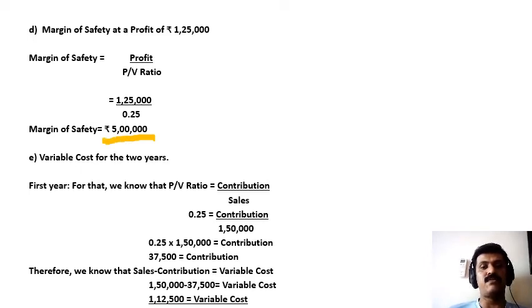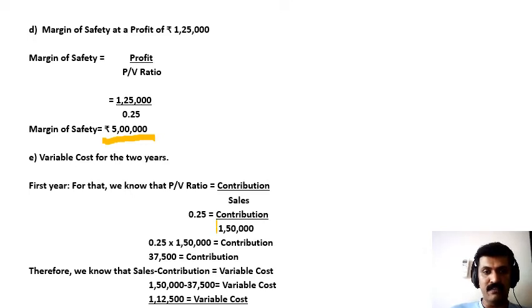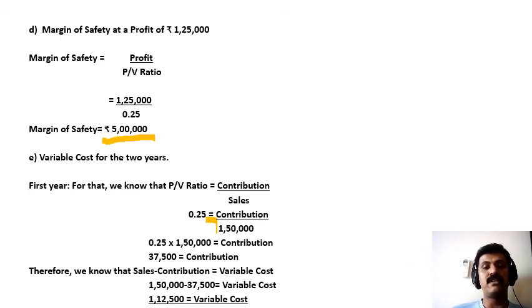Next, we have to calculate the variable cost for the two years. We know that PV ratio equals contribution divided by sales. So PV ratio 0.25 equals contribution divided by first year sales 1,50,000. Cross multiplying, 0.25 into 1,50,000 equals contribution, which comes to 37,500. Therefore, sales minus contribution equals variable cost. That is 1,50,000 minus 37,500 equals variable cost of 1,12,500 for year one.